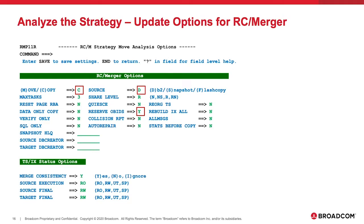On the lower section of this screen, the options here relate to the consistency that we want to ensure from our source objects and the status of the source and target objects during execution and once it has completed. Here we want consistency, so we are asking RC Merger to start the source objects in read-only mode, and when the execution completes, we are asking for both the source and the target to be left in read-write mode. Once we're happy with our option settings, we type save on the command line and PF3 which takes us to the next screen.